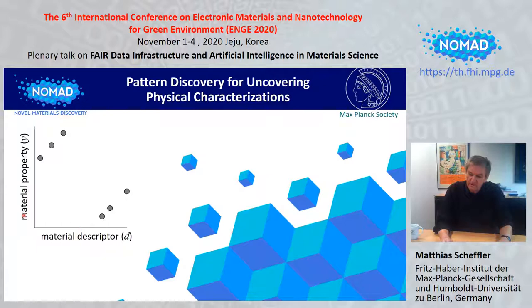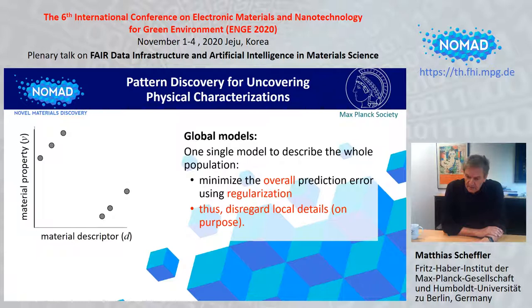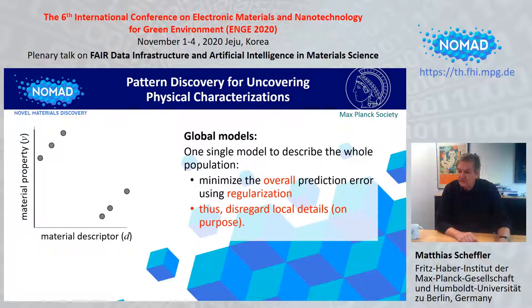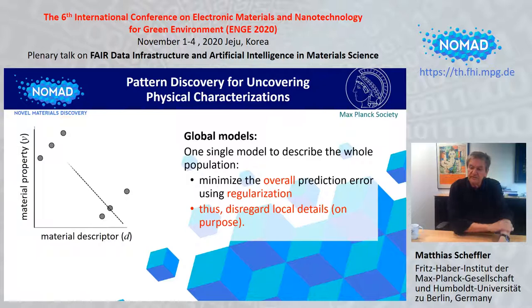As a tutorial picture, consider data points representing material properties as a function of some material descriptor. Global models — for example, machine learning — use one single model to describe the whole population. That implies minimizing the overall prediction error using regularization, and thus one disregards local details on purpose. A simple fit just looks at the global model.